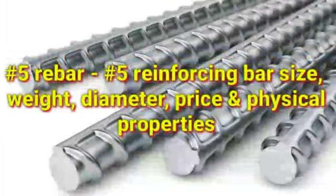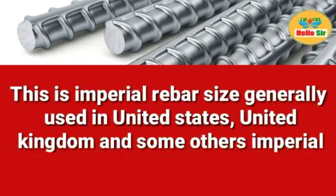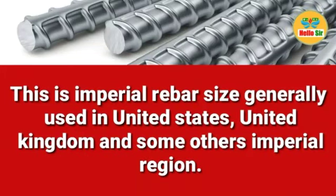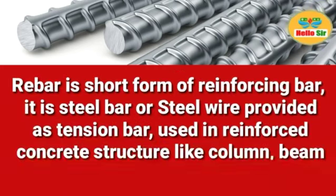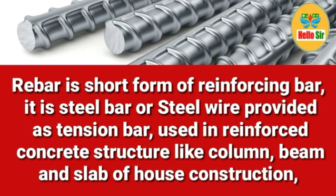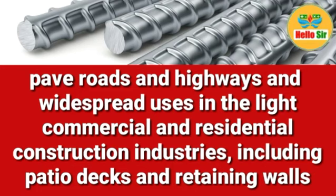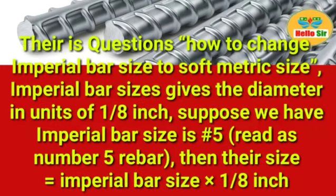Today we will discuss number five rebar — number five reinforcing bar size — its weight, diameter, price, and physical properties. This is an imperial rebar size generally used in the United States, United Kingdom, and some other imperial regions. Rebar is short for reinforcing bar; it is a steel bar or steel wire used in reinforced concrete structures like columns, beams, and slabs of house construction, paved roads, highways, and water spaces, as well as light commercial and residential construction including decks and retaining walls.